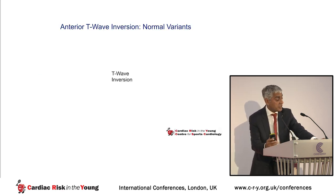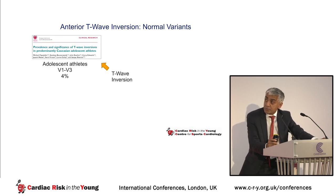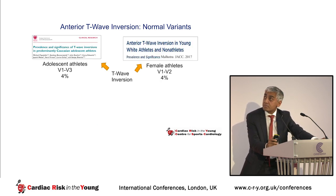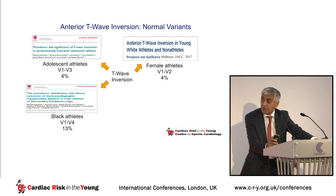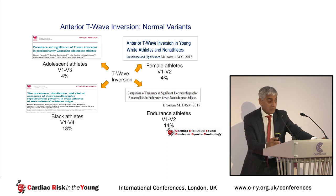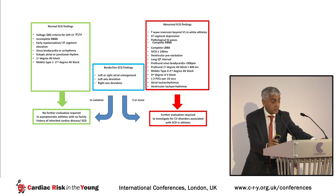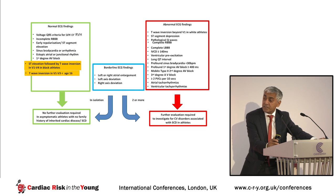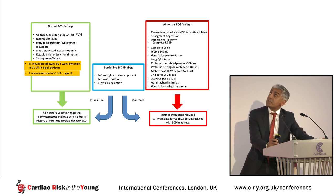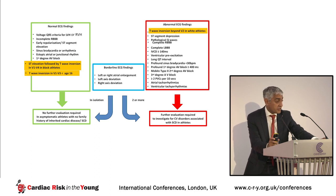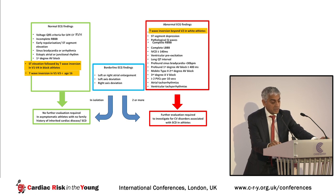In summary, T wave inversion is not always abnormal in athletes — it is present in around 4% of adolescent athletes, 4% of women, 13% of black athletes, and 14% of endurance athletes. Under the new criteria, ST segment elevation followed by T wave inversion in V1 to V4 is categorized as normal in black people; T wave inversion in V1 to V3 in those under 16 is normal; and T wave inversion in V1 only is now normal, with T wave inversion beyond V2 in white individuals requiring further investigation.